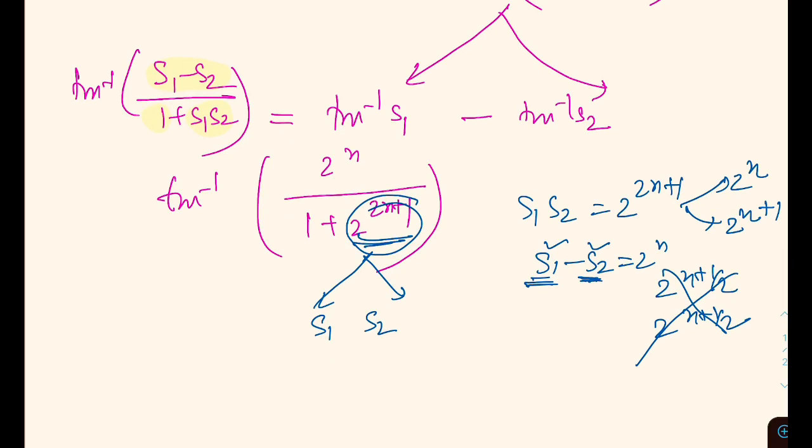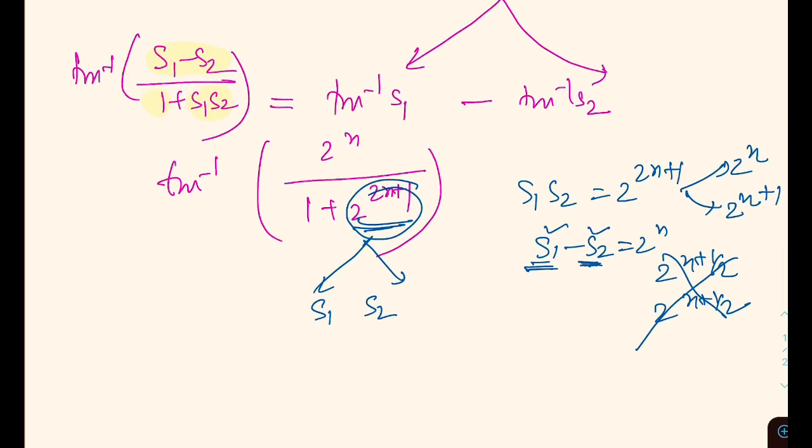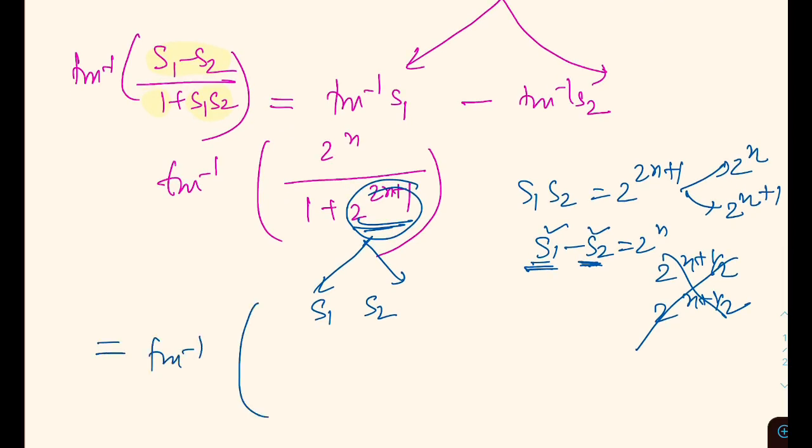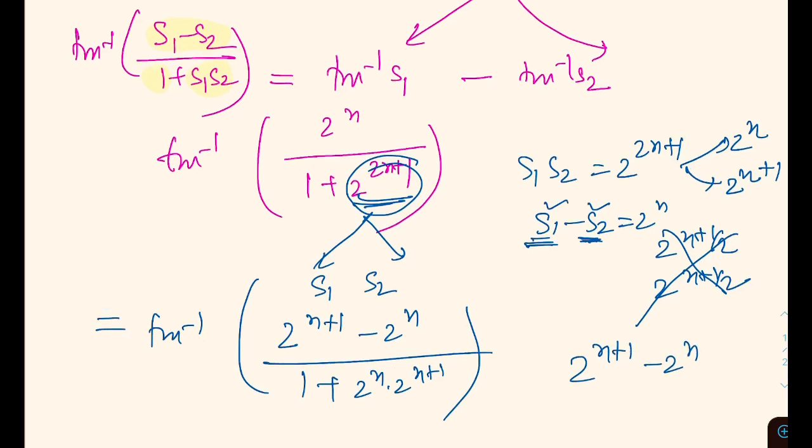Coming with this proposal, we can write this as (2 raised to the power N plus 1 minus 2 raised to the power N) by (1 plus 2 raised to power N into 2 raised to power N plus 1).